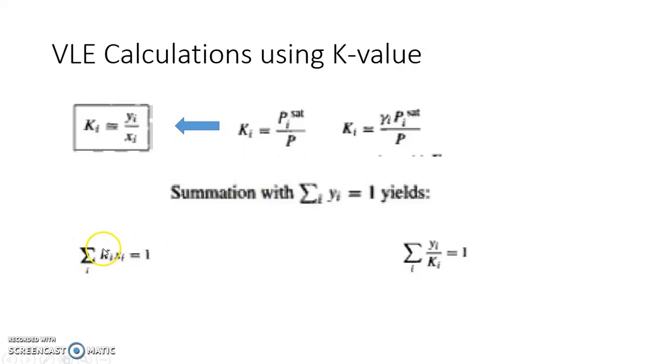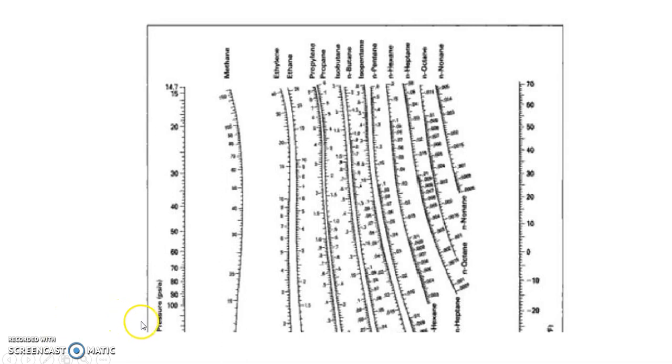DePriester charts make calculations very fast because they don't involve heavy mathematics — it is a trial-and-error method. Looking at these expressions, your trials can be guided: if Σ(ki·xi) > 1, draw lines so that the K value decreases. Exactly the opposite applies for the dew-point case. Following the equations properly gives you the correct direction for the next iteration, and within two to four iterations you get the answer.